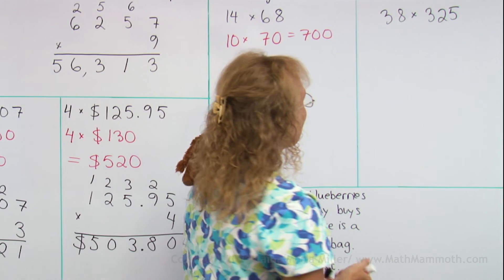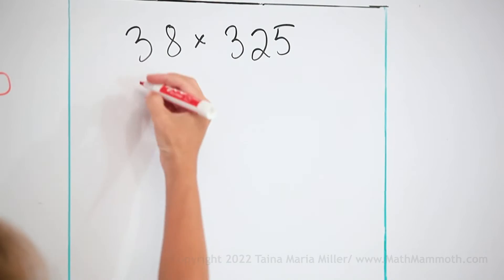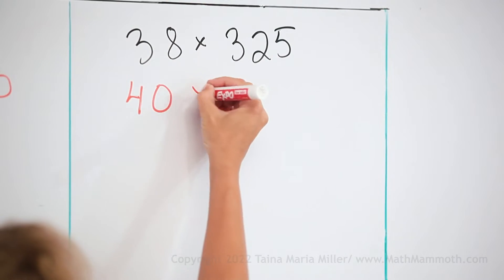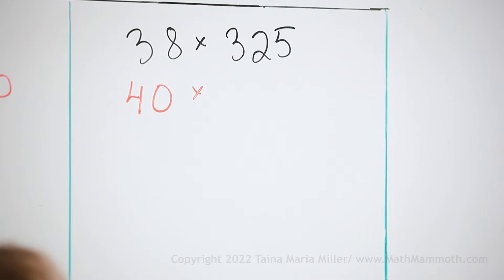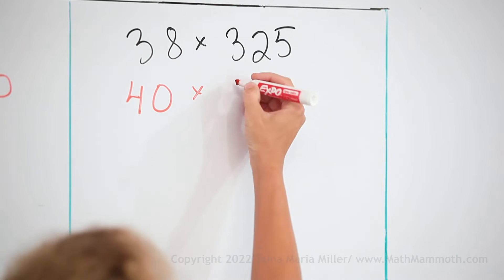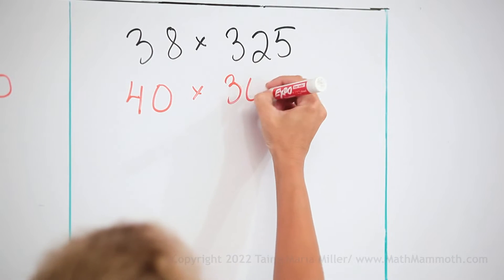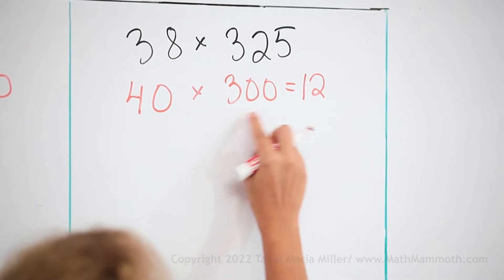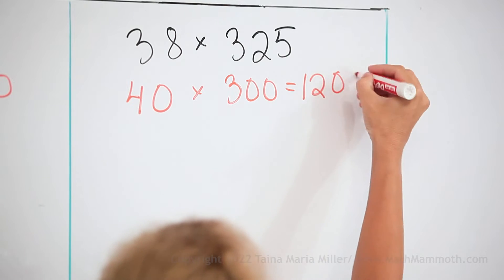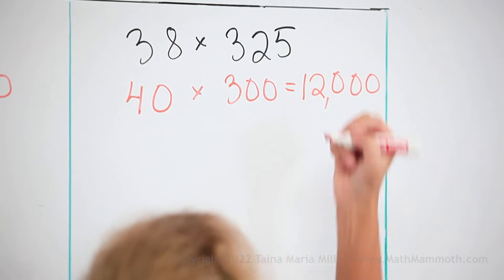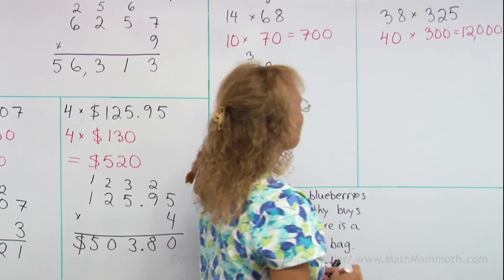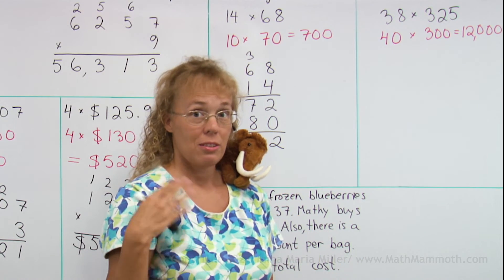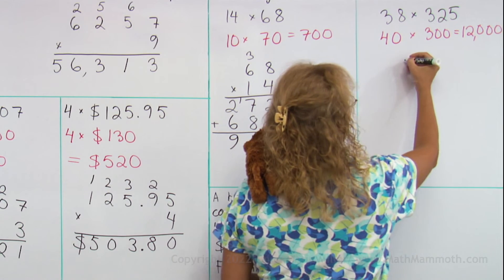One more. Let's estimate first. Let's round this to 40 and this one to 300, so we will get 12,000.